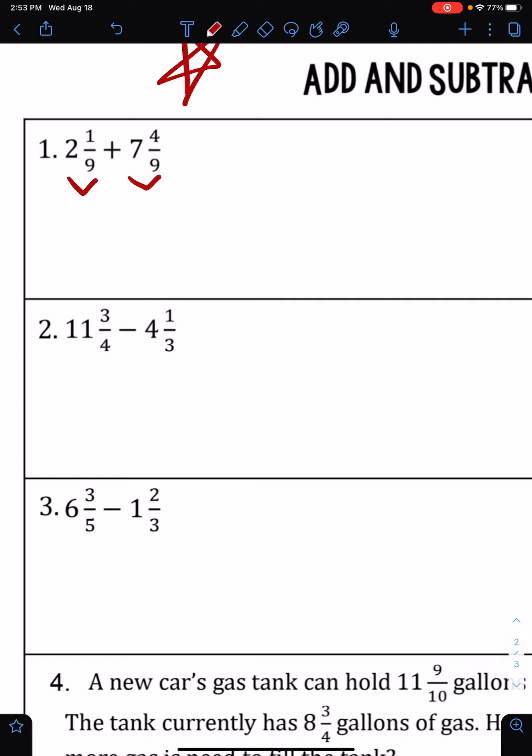So 2 times 9 is 18 plus 1 is 19. 7 times 9 is 63 plus 4 is 67. We're lucky that they have the same denominator, so I just need to add 19 and 67 and I get 86.